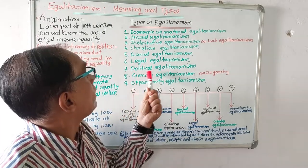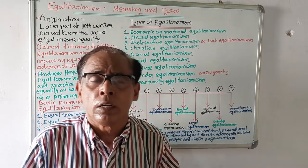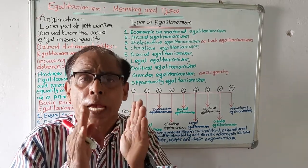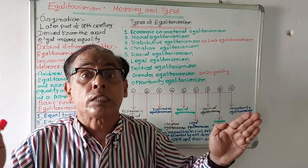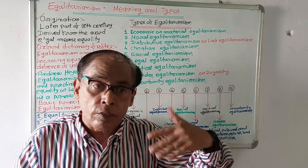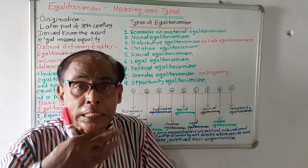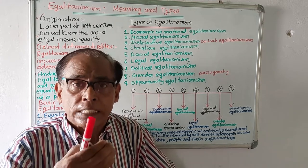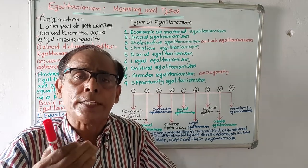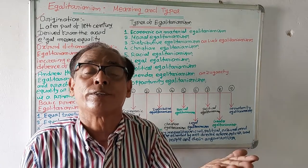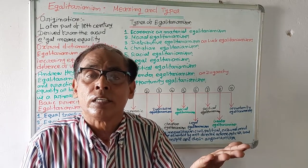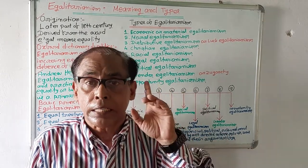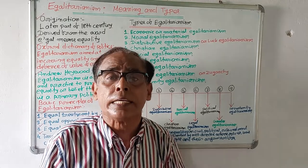Number seven: political egalitarianism. Political egalitarianism means whenever people will be given political opportunities and privileges, there must not be any discrimination. Whenever people will be given political opportunities, facilities, and scopes, there must not be any disparity. For example, in India, those who have completed the age of 18 years are entitled to vote, regardless of any caste, colour, religion, or language.